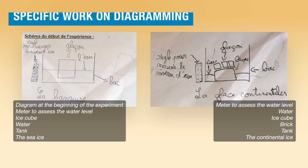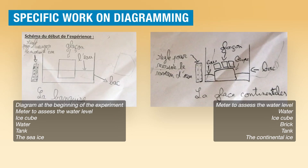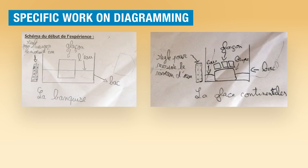It is possible to start specific work with students on their schematisations. This work will focus on comparing different diagrams proposed by the students. For example, the analysis could focus on the way to represent the water level, whether or not it is necessary to use a ruler for straight lines.